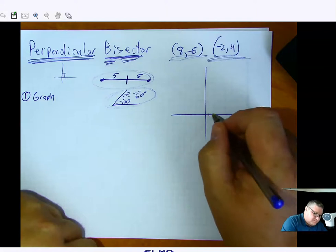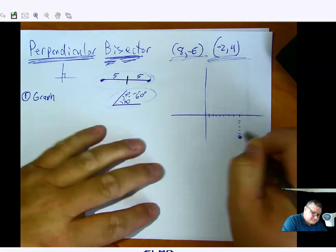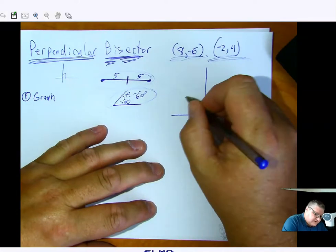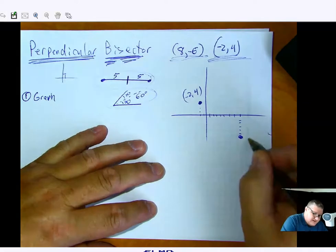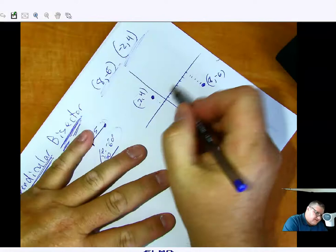Okay. So 1, 2, 3, 4, 5, 6, 7, 8. 1, 2, 3, 4, 5, 6. 1, 2. 1, 2, 3, 4. There you go. So I got negative 2 comma 4. I got 8 comma negative 6. This makes sense. So I now have a segment.